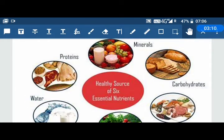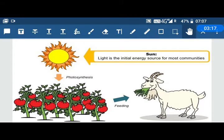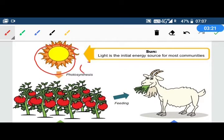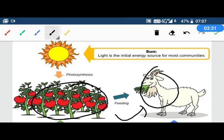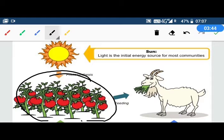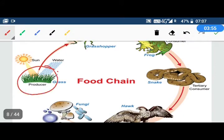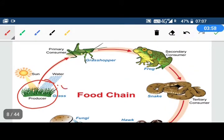After discussing the different types of nutrients that we require in the body, let's discuss where food comes from in organisms. The ultimate source of energy is the sun. Plants are the ultimate source of food, and plants make food by photosynthesis using the sun's energy.